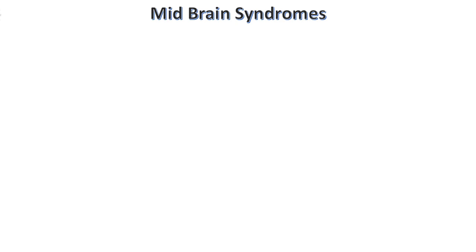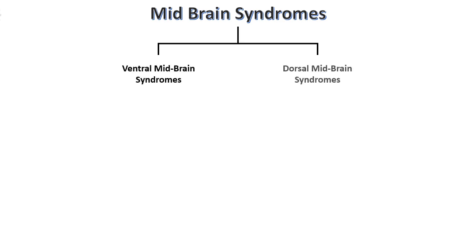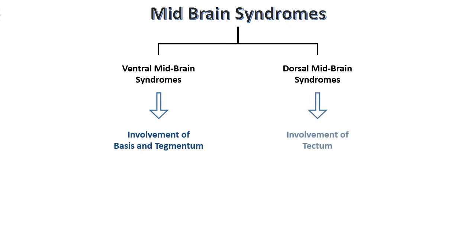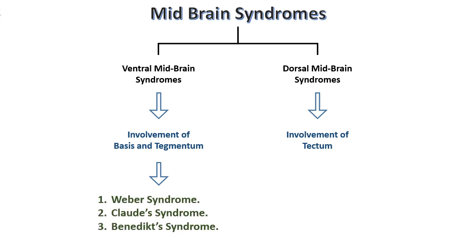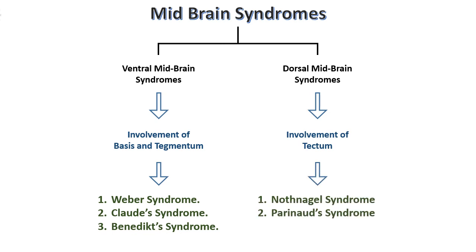Now let's come to our main topic: midbrain syndromes. We will divide them into two. First is ventral midbrain syndromes, and second is dorsal midbrain syndromes. Ventral syndromes mean involvement of the basis and tegmentum, and dorsal syndrome means involvement of the tectum. Ventral syndromes include Weber syndrome, Claude's syndrome, and Benedict syndrome. Dorsal syndromes include Nothnagel syndrome and Parinaud syndrome. We will see all syndromes one by one conceptually.